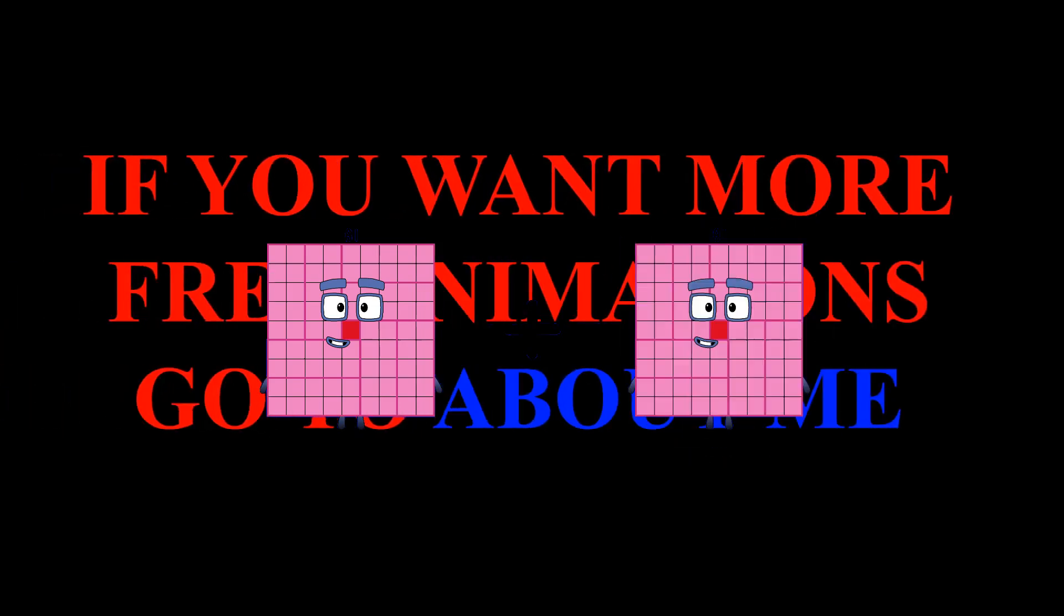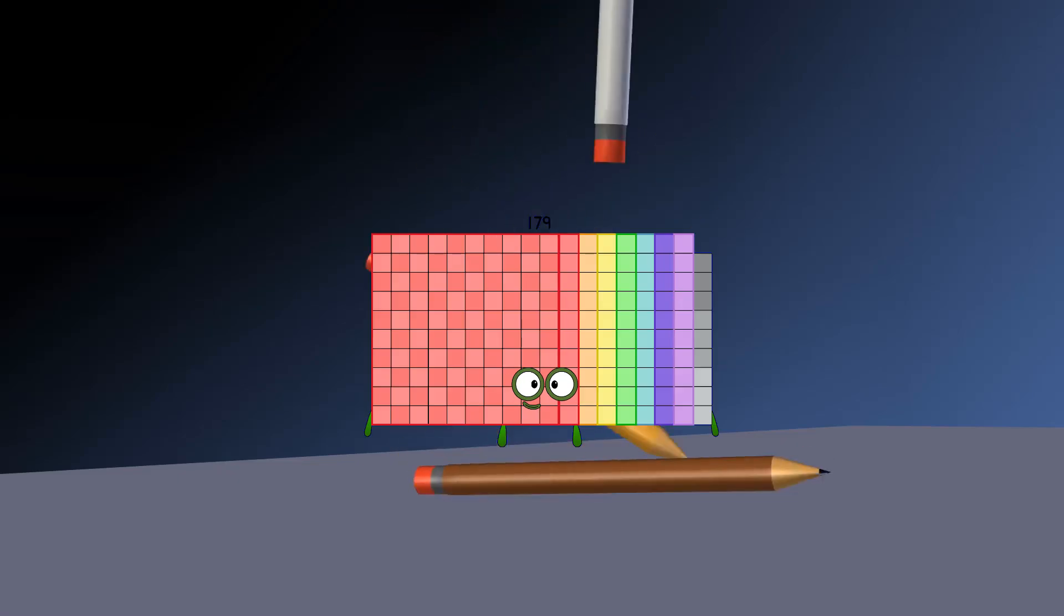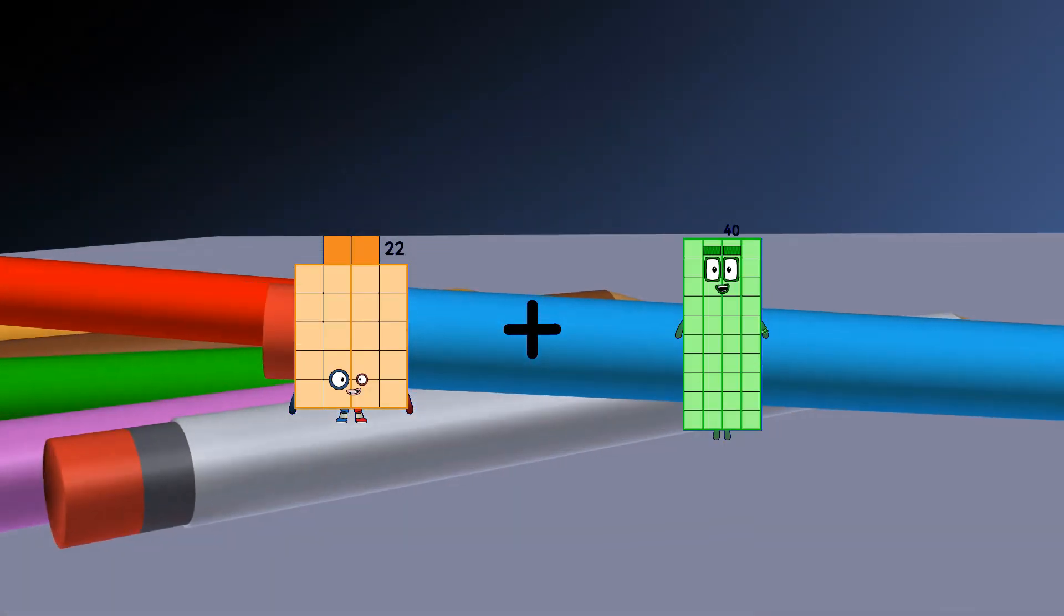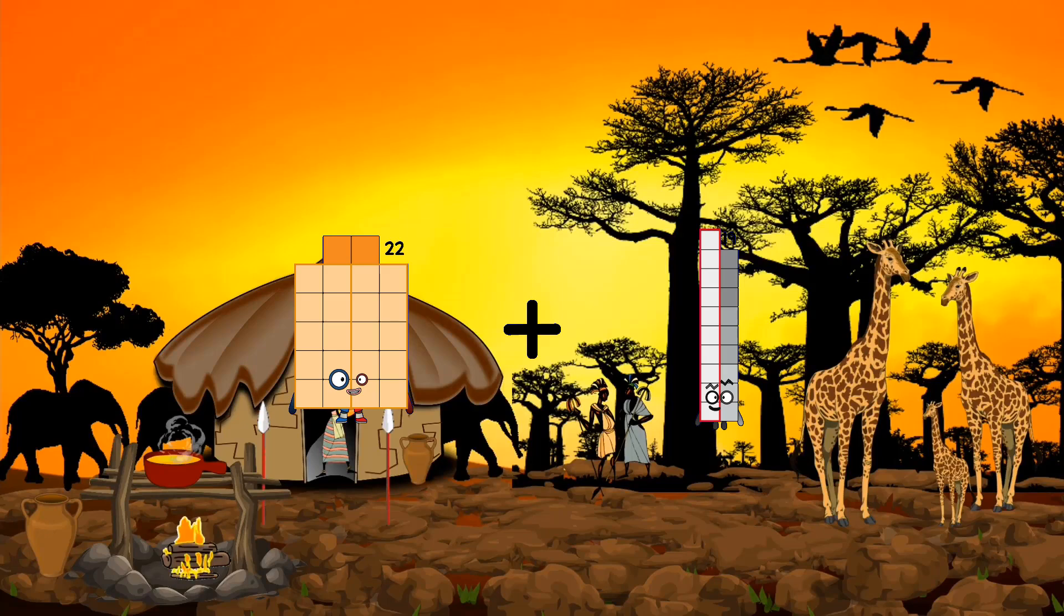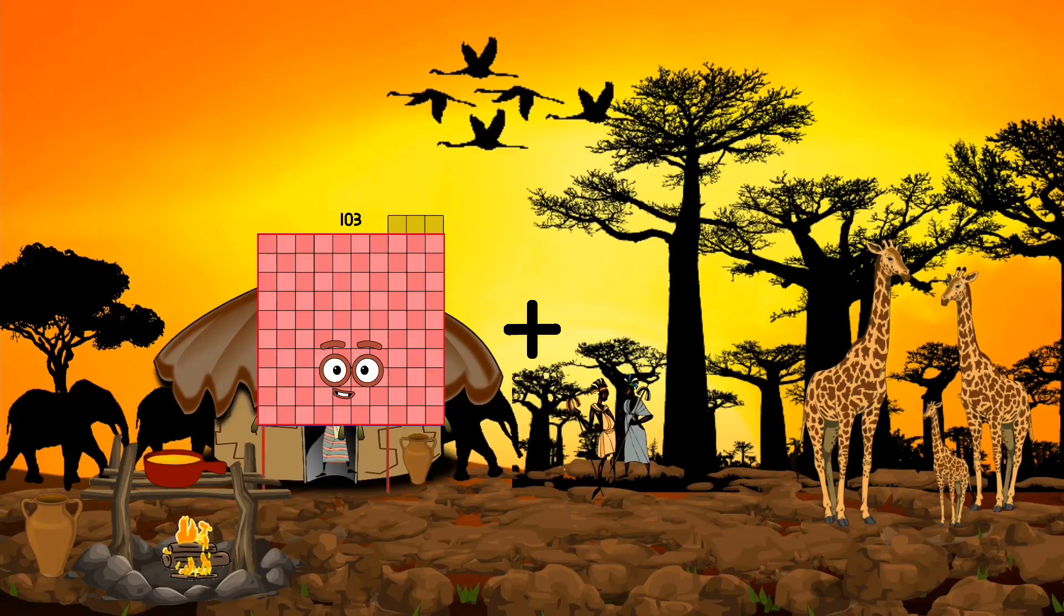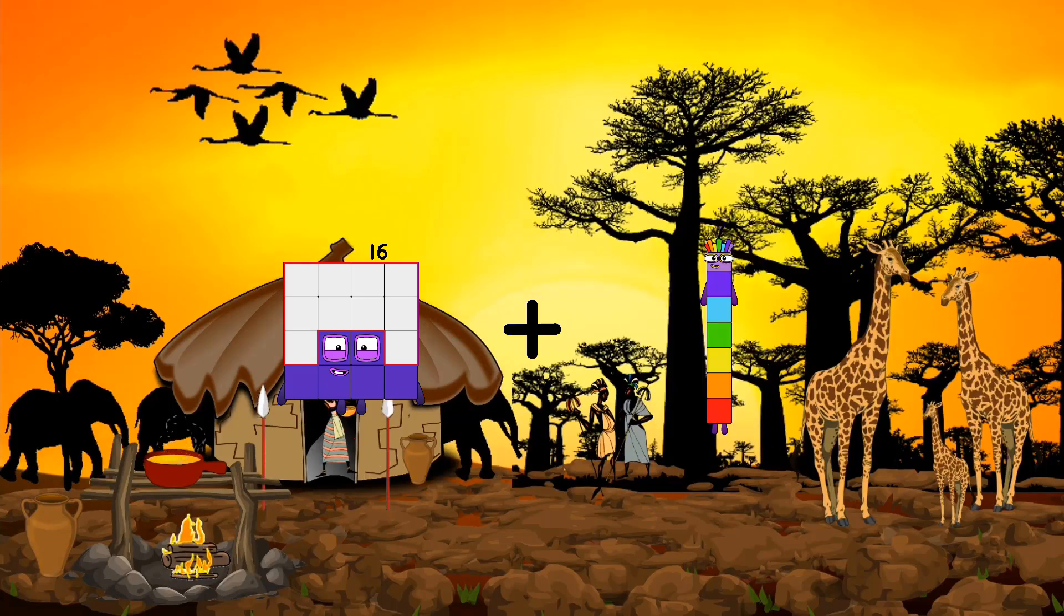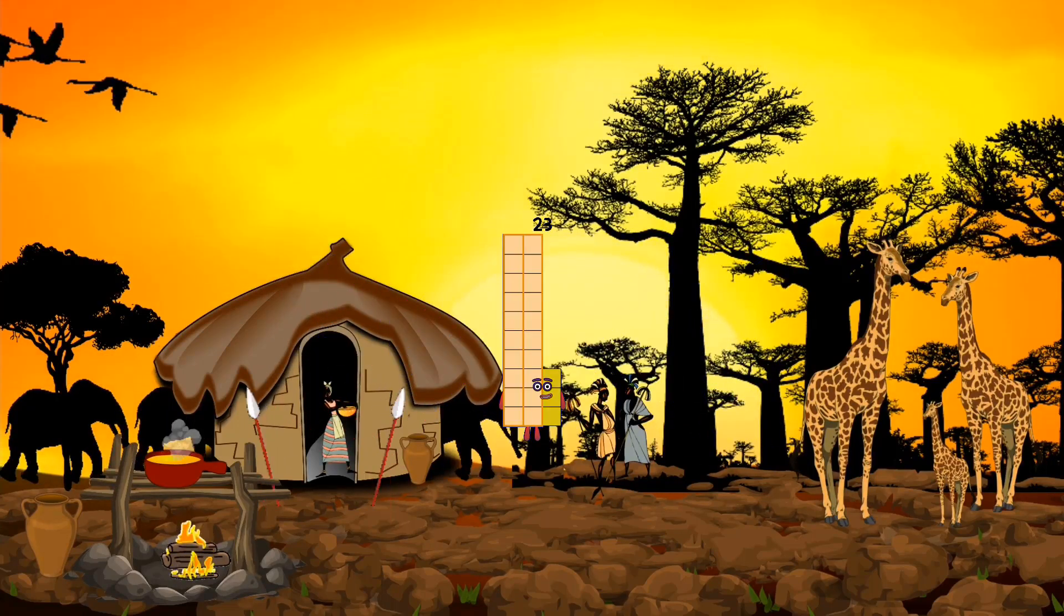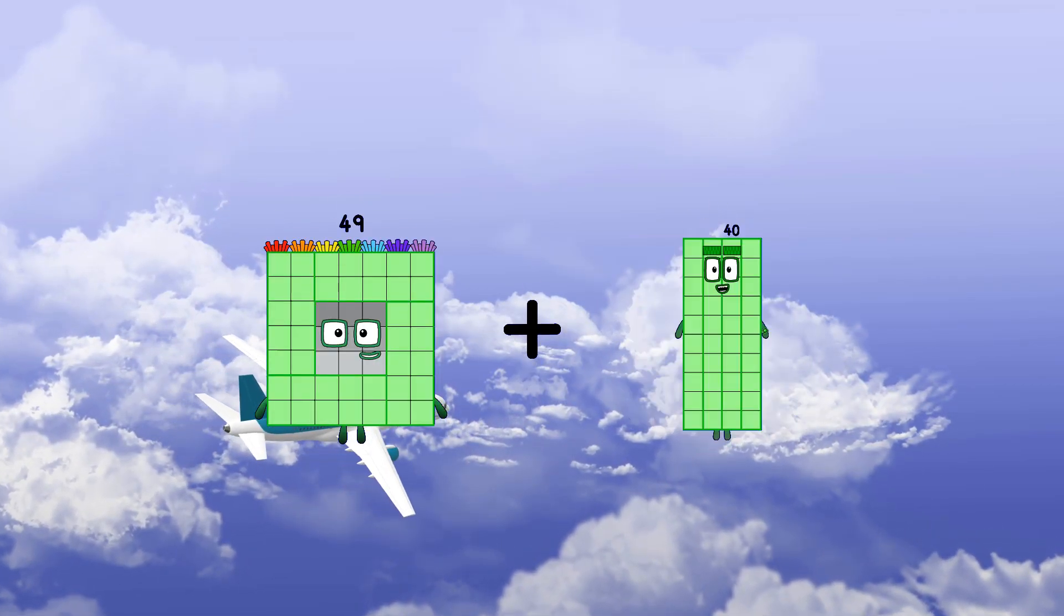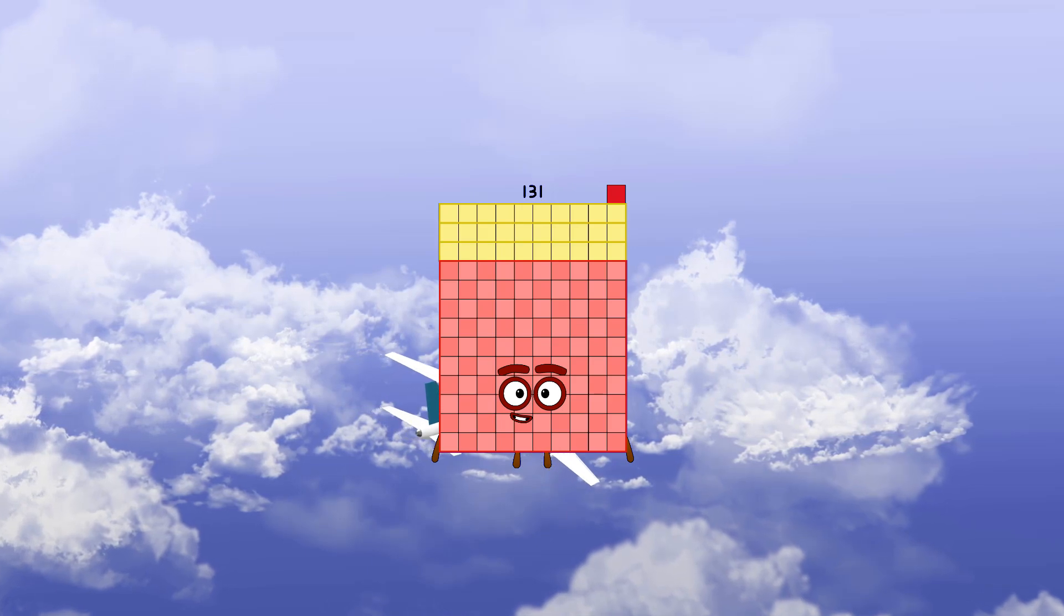81 plus 98 equals 179. 22 plus 19 equals 41. 16 plus 7 equals 23. 49 plus 82 equals 131.